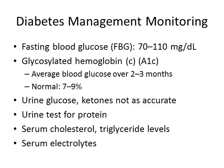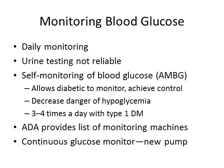These patients need daily monitoring. Urine testing is not reliable, so we rely on self-monitoring of blood glucose (SMBG), which allows the diabetic to monitor and achieve control over their blood glucose. It decreases the dangers of hypoglycemia. We encourage monitoring three to four times a day, and there are multiple types of monitoring devices available — we want to make sure the client and their significant other know how to use them appropriately. Continuous glucose monitoring devices are also available.